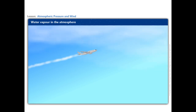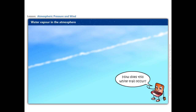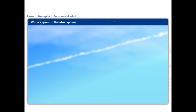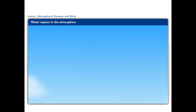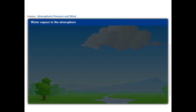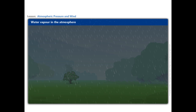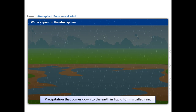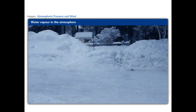Jet planes flying in the sky leave a white trail behind them. The moisture from the engines condenses as the jet planes fly, and we see trails of this condensed moisture when there is no air movement to disturb it. Similarly, when water vapor rises, it starts cooling. The water vapor condenses, causing the formation of droplets of water. Clouds are just masses of such water droplets. When these droplets become too heavy to float in air, they come down as precipitation. Precipitation that comes down to the Earth in liquid form is called rain. Other forms of precipitation are snow, sleet, and hail.